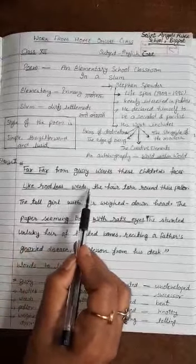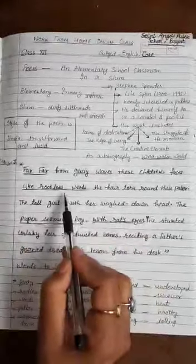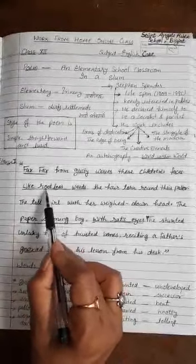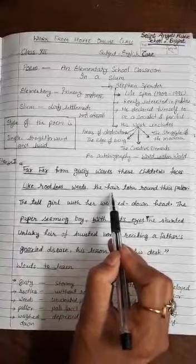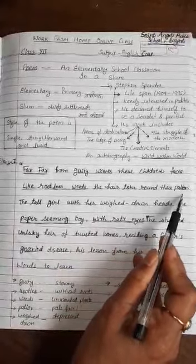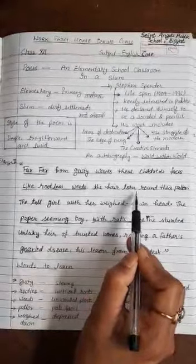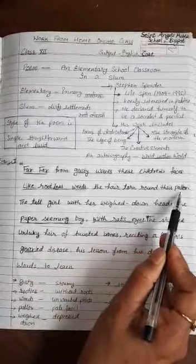Here the poetic device is simile. When we find like word in the poem line and the comparison is given between two things, then the poetic device is simile. Here the poetic device is simile.